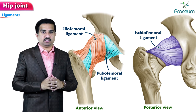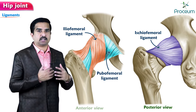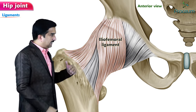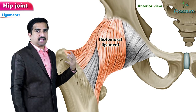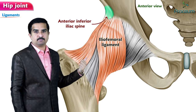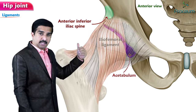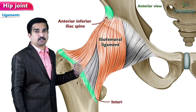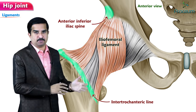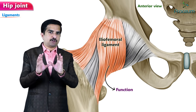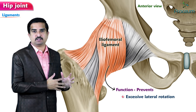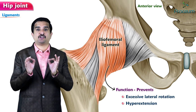First let us concentrate on the outer ligaments. The first outer ligament is the iliofemoral ligament. It attaches superiorly to the anterior inferior iliac spine and to the acetabulum, and inferiorly to the intertrochanteric line, thereby creating a Y shape. Its important function is that it prevents excessive lateral rotation and hyperextension of the hip.